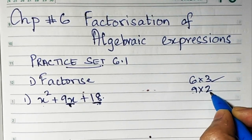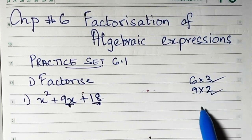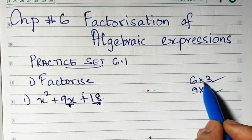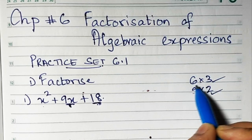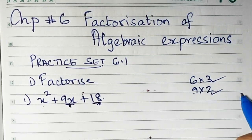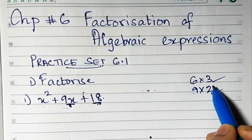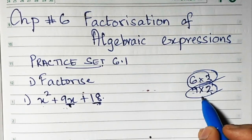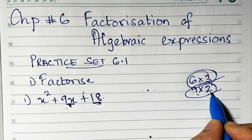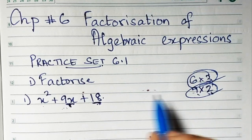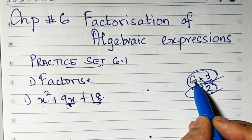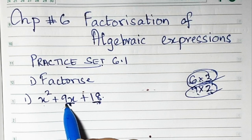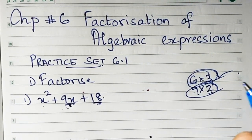So we have the pairs 6,3 and 9,2. We have to take one combination such that when you add or subtract, you get 9. The product 6×3=18 and 9×2=18. If I take 9 and 2, adding or subtracting won't give me 9. If I take 6 and 3 and add them, I will get 9. So I'll take this combination.